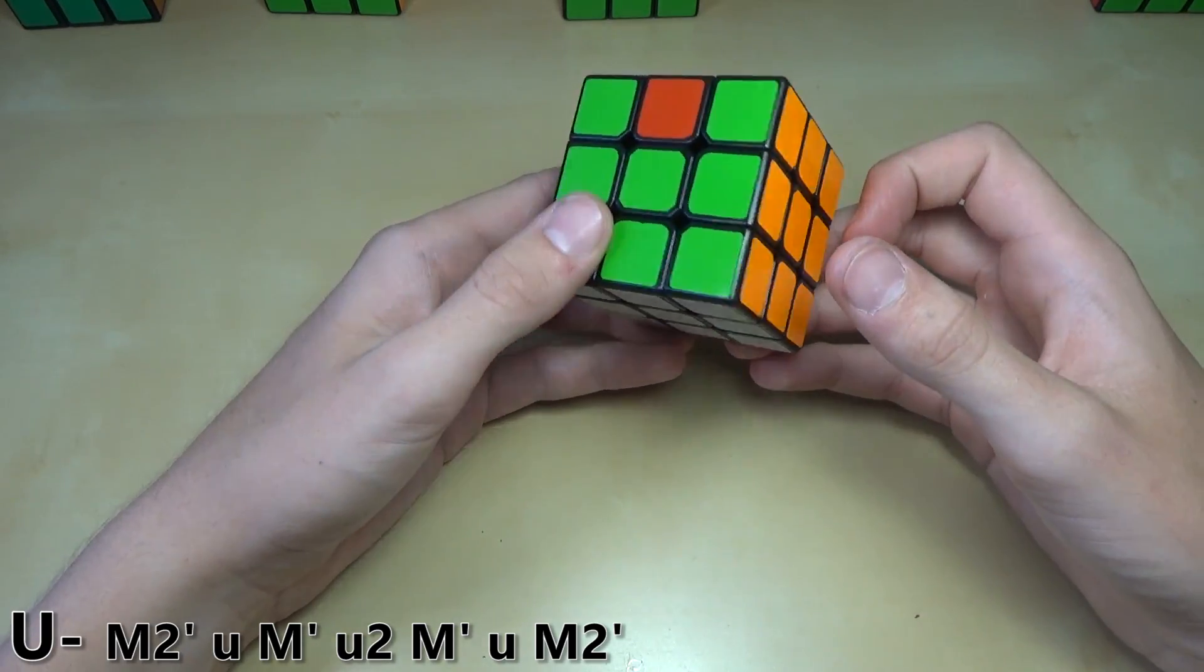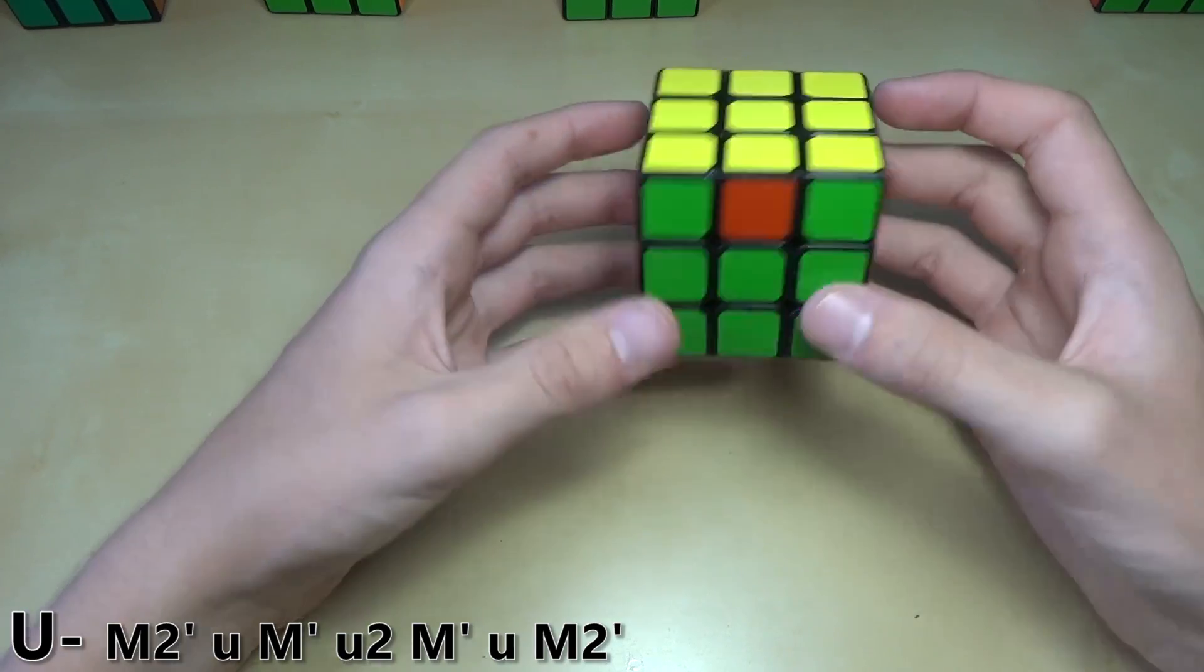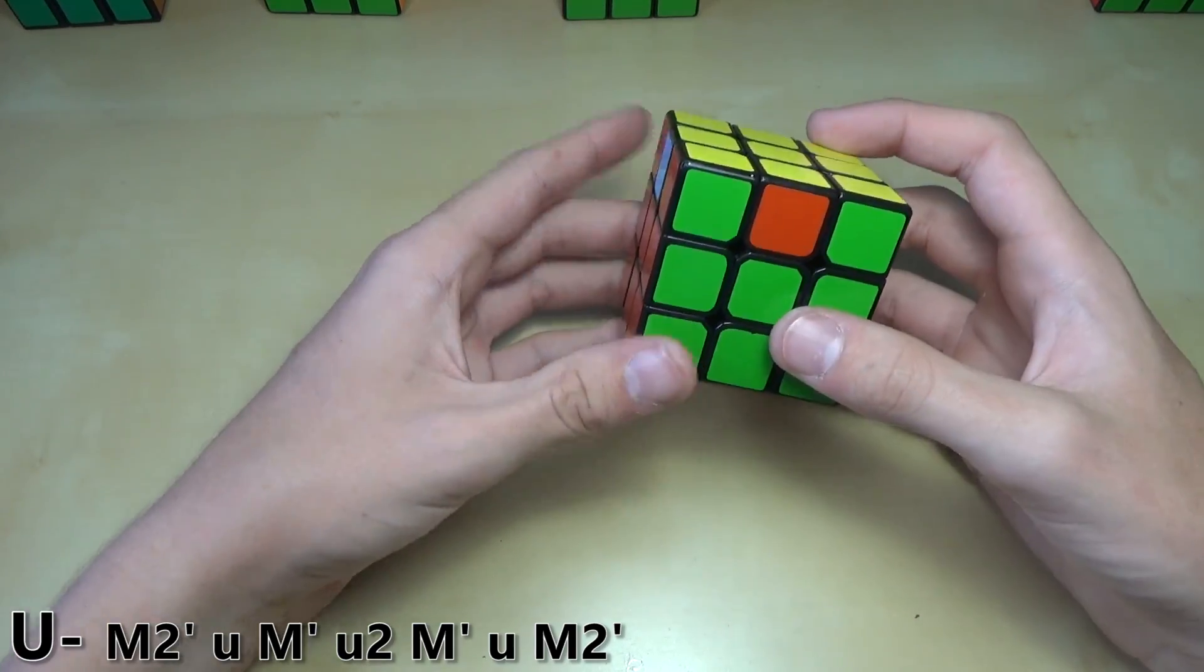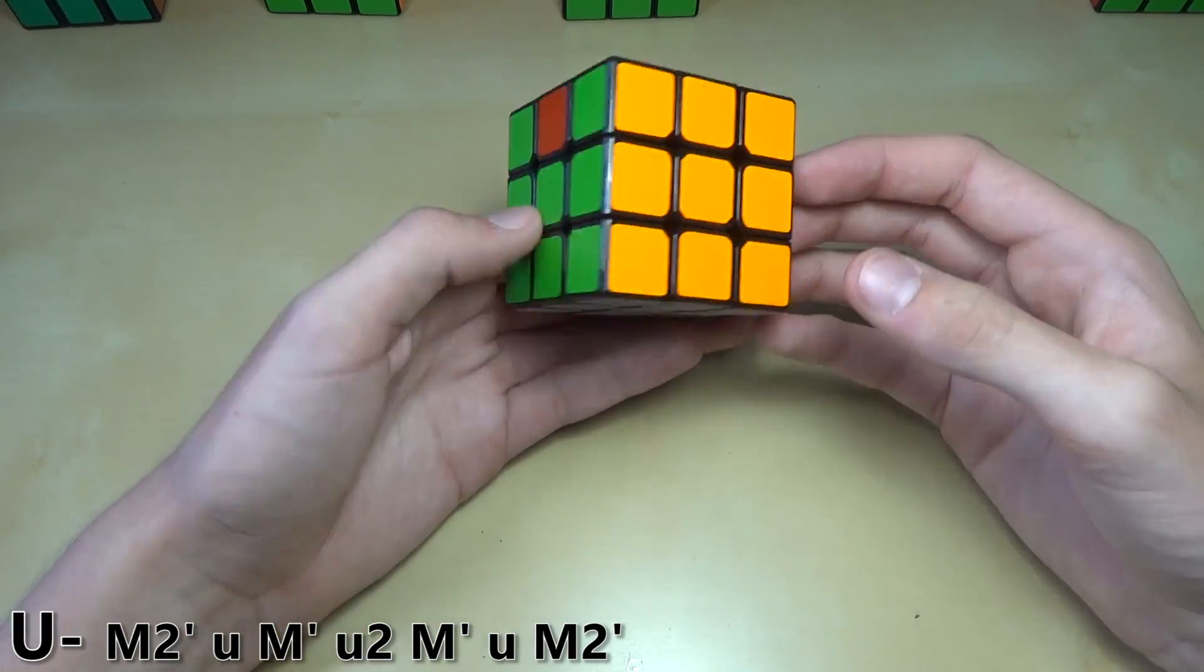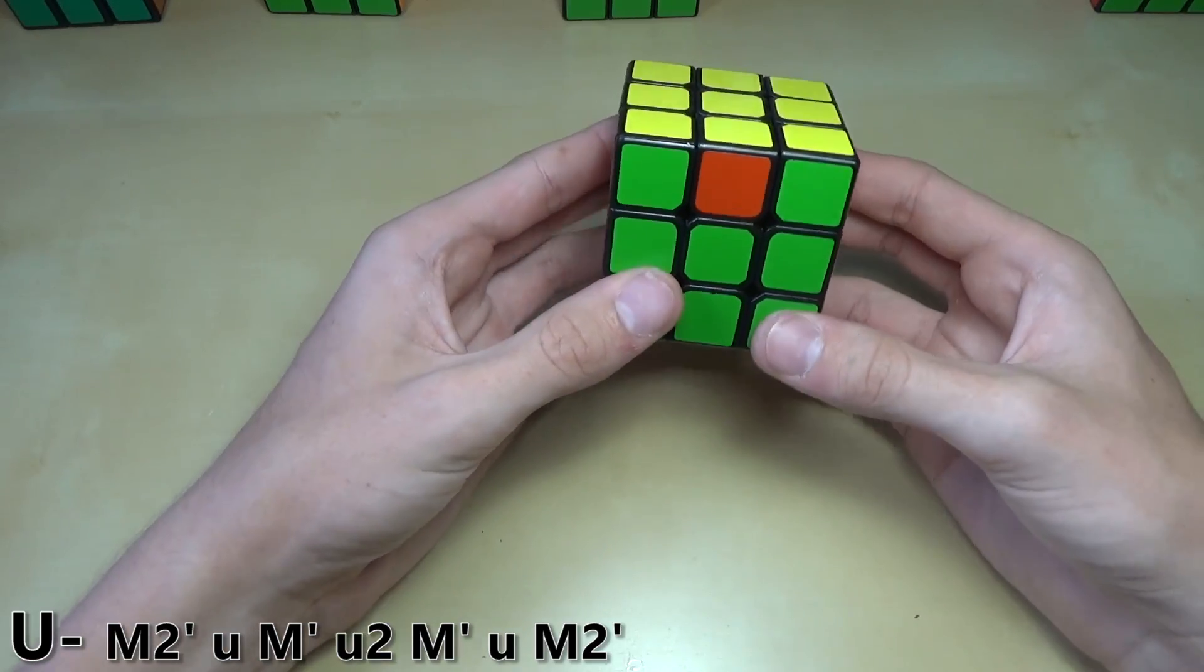I do it a little bit slower because I haven't quite mastered the TPS on it. It also involves M2 moves that I showed on the T-perm. That one is you hold it like this, and you do this.